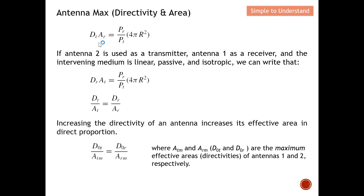Now let's say antenna two is used as the transmitter while antenna one becomes the receiver. Since the medium is linear, passive, and isotropic, we can rewrite the equation by swapping roles. This gives D_r · A_t = (P_r · 4π r²) / P_t, and since the right-hand sides are equal, we conclude that D_t · A_r = D_r · A_t.